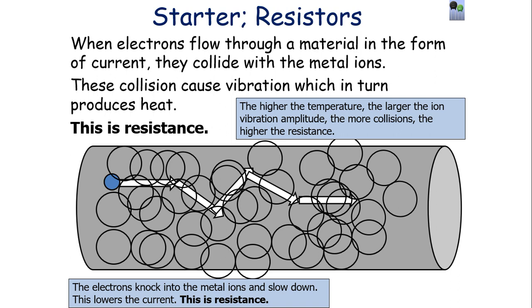The higher the temperature, the greater the amplitude of vibration of those conductor ions, so there are more collisions with the electrons as they travel through the conductor, so the resistance gets higher. At a lower temperature, the ions vibrate with a lower amplitude, so there are fewer collisions with the electrons, giving a lower resistance.